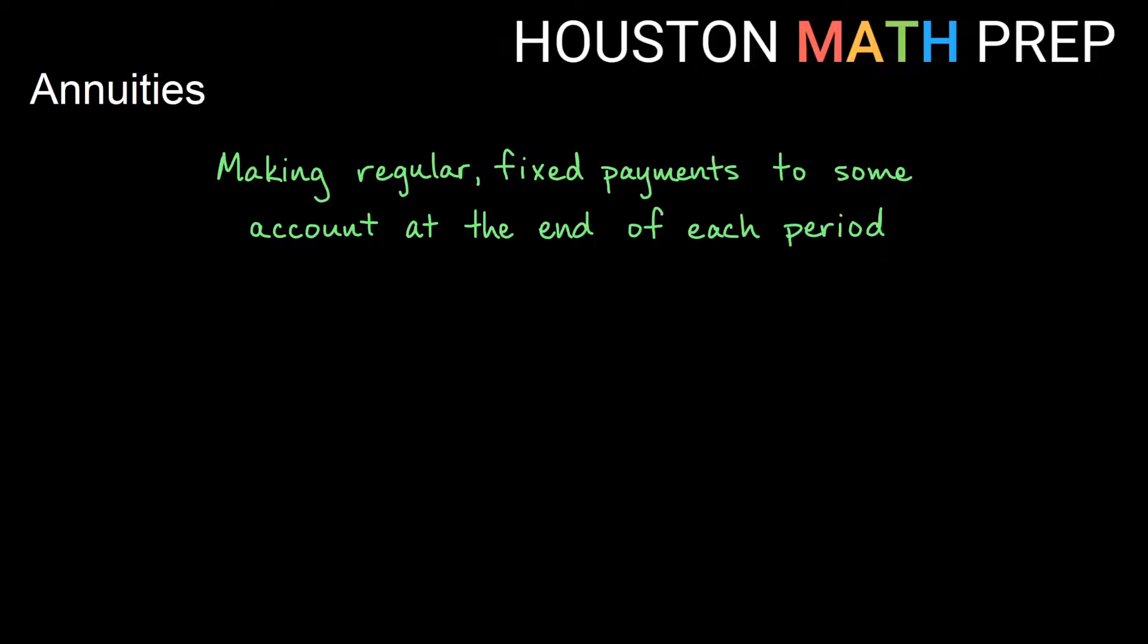Hey everyone, Houston Math Prep here. We want to talk to you about annuities in this video. We're actually going to focus on a particular type of annuity in this video called an ordinary annuity, where we make regular fixed payments to an account at the end of each period. So say at the end of every month or every quarter, that's going to be different than something called an annuity due, where payments are made at the beginning of each period. So just know that in this video, we're talking about an ordinary annuity where payments are at the end of each period.